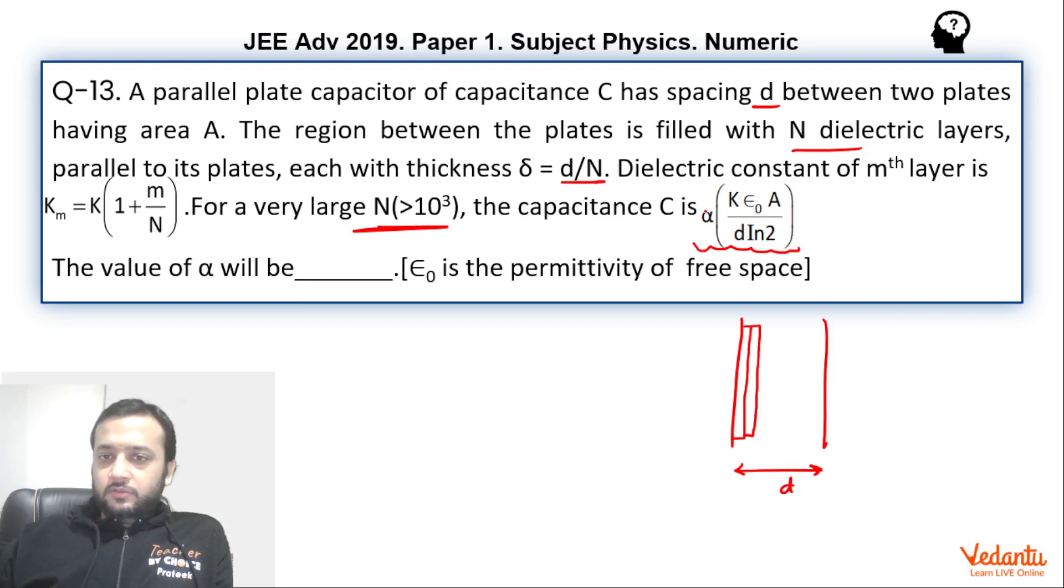So basically, although the question has been given in discrete format—by this I mean there are N dielectric layers and each layer is distinct from the other—since N is a very large number, we can treat it as if it's a continuous distribution rather than a discrete one. You can think like that: if N is very large, for example, keep increasing the value of N, so basically one particular dielectric will become so thin.